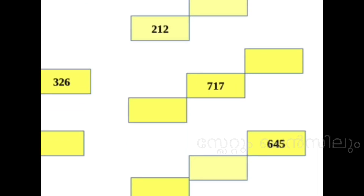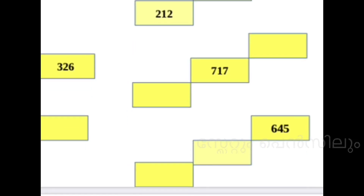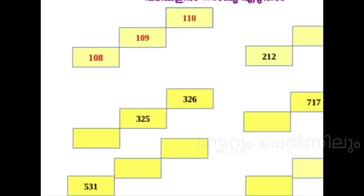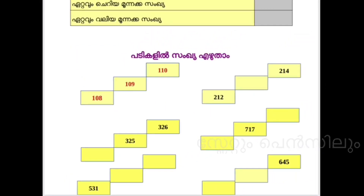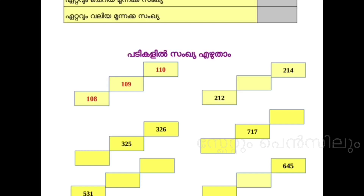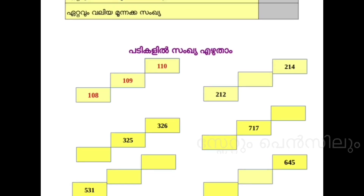When it comes to the pattern, when the pattern is first, it is the same shape. If you are given 645, then you have the same shape here. You have the same shape. Then we will be able to get the Vittak Sankhya. Is it clear?